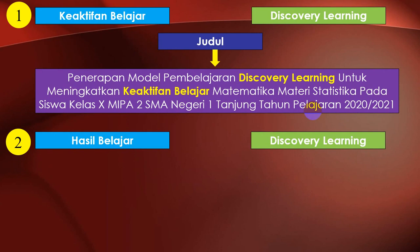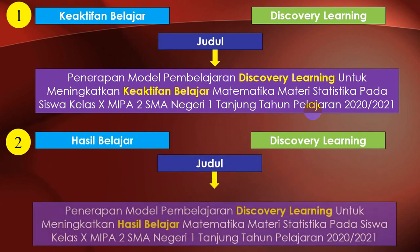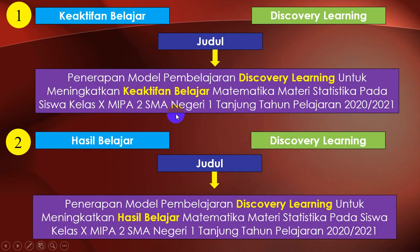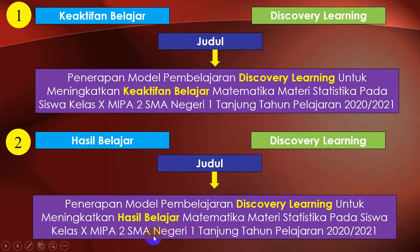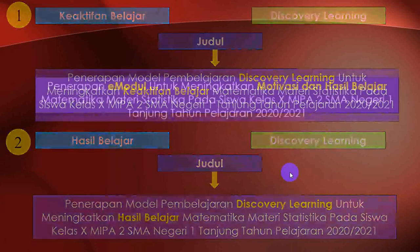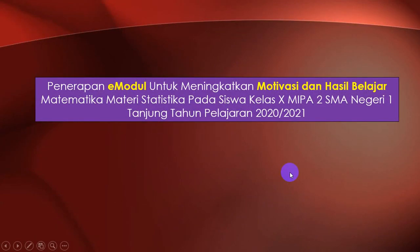Jadi di judul PTK ini mengandung: solusinya apa - model pembelajaran, yang ditingkatkan apa - keaktifan belajar, mata pelajaran apa, materinya apa, kelas berapa, SMA mana, tahun pelajaran berapa. Gampang! Contoh kedua: hasil belajar kita kaitkan dengan Discovery Learning. Judulnya menjadi seperti ini - tinggal keaktifan belajar kita ganti menjadi hasil belajar, selebihnya sama.